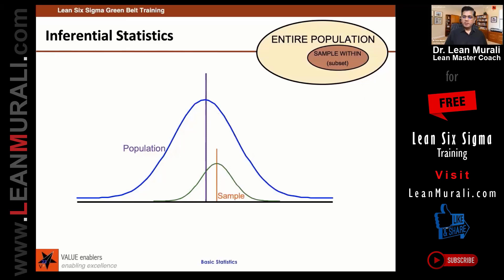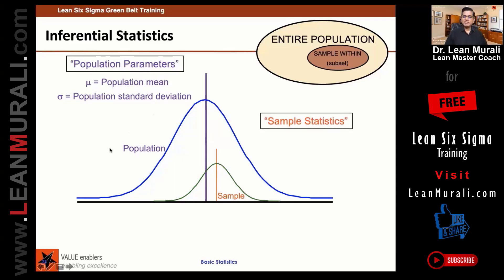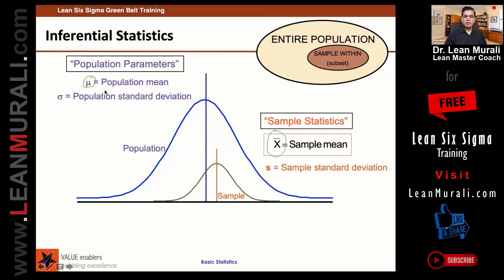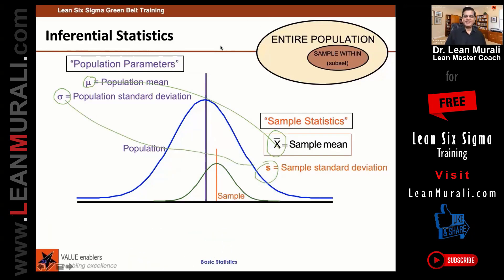So this is the population and this is the sample. We have some parameters for population, and we will use the word mu — I'm introducing some Greek characters. Mu is the population mean and sigma is the standard deviation for the population. So when you use mu and sigma, it refers to the population parameters. Similarly for the sample, we use X-bar and S. One is for population, one is for sample. Samples from a population can be used to infer or approximate population parameters — thus it's called inferential statistics.